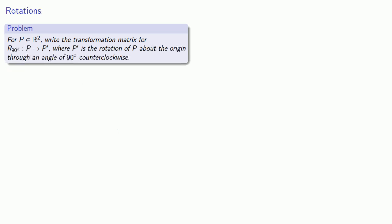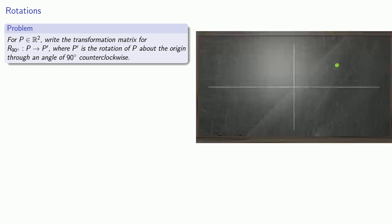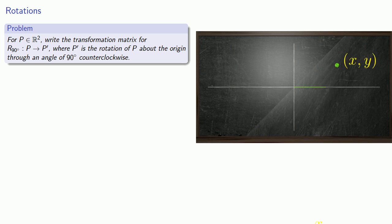We can take another transformation. Again, let's take a point in R2, and this time we'll consider the transformation R90 degrees, which will be the rotation of our point about the origin through an angle of 90 degrees counter-clockwise. We'll have our point P with coordinates x, the horizontal distance, and y, the vertical distance. Then we'll spin our point 90 degrees.